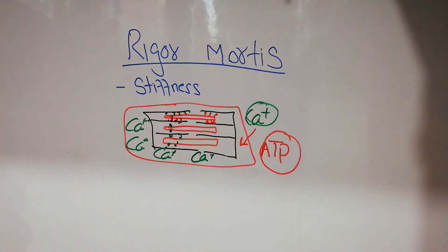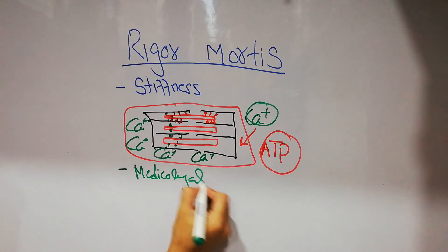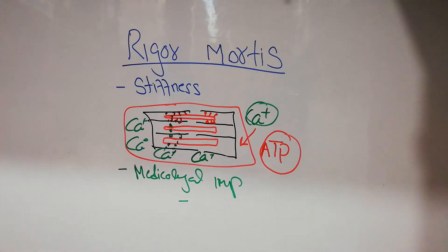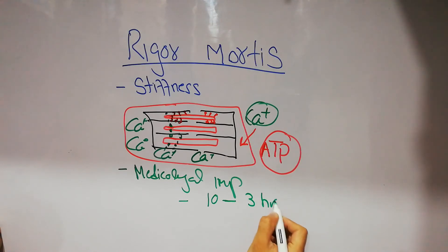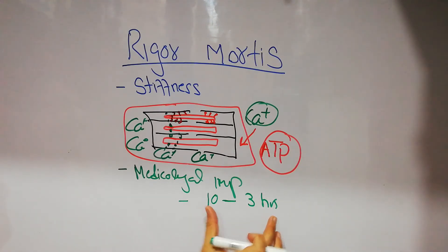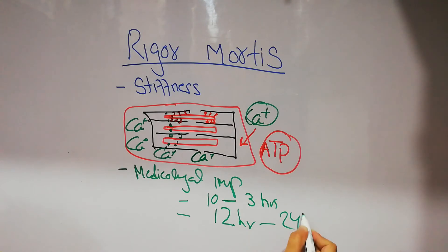That is the mechanism behind rigor mortis. The medical-legal importance is significant. Rigor mortis starts within 10 minutes to 3 hours of the death of the human body, depending on conditions. It reaches its peak within 12 hours to 24 hours.